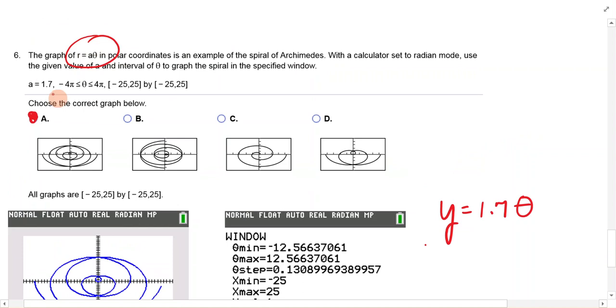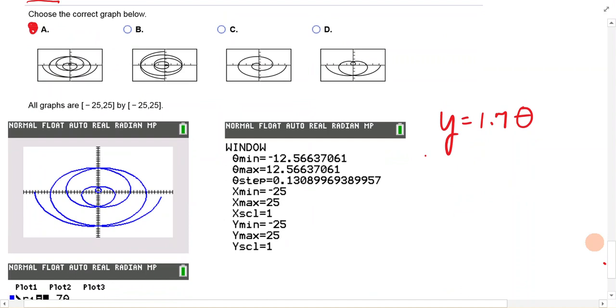Because you're trying to match this. And they give you an a value of 1.7. So you put that in, put that as your window, and hit graph. And you get this lovely graph. And you can tell that that is a. So I think that'll get you started and get you where you can graph a polar equation.